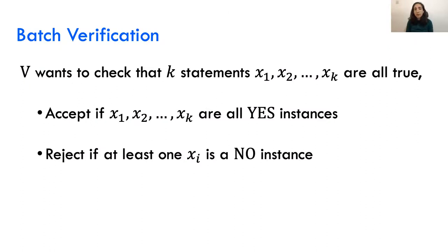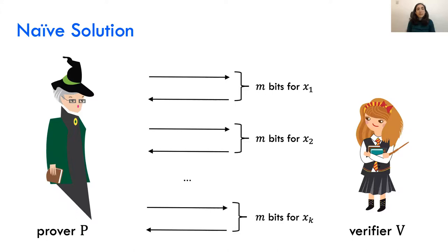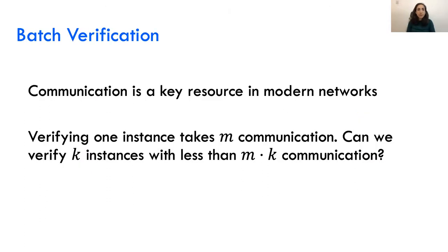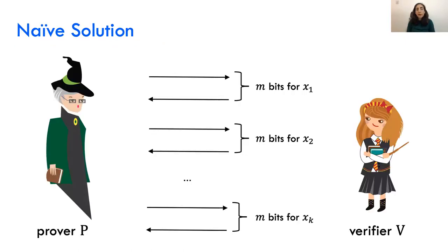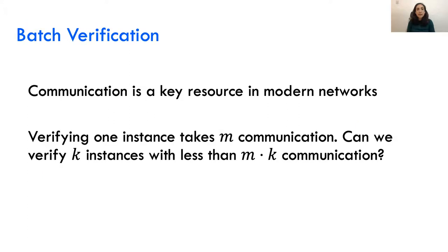So far we talked about verifying only one instance, but let's say we want to check that k different statements are all true — meaning we want to accept if all instances are yes instances, and reject if at least one instance is a no instance. The naive way is to run the basic protocol for each input sequentially. However, communication is a key resource in modern networks, and if verifying one instance takes m bits, then verifying k instances takes m times k communication bits. Can we verify k instances with less than m times k communication bits?